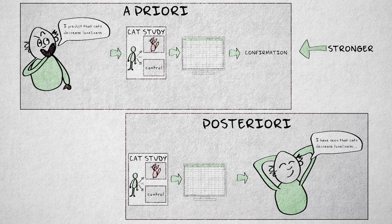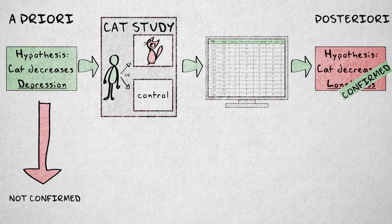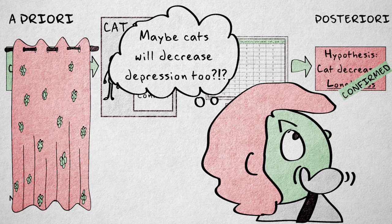Prediction is much harder. Also, adaptation of the hypothesis based on the results means that the original hypothesis was not confirmed. This failure to support a hypothesis forms useful information for other researchers who are investigating the same phenomenon. This information is lost if the original hypothesis is never reported.